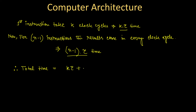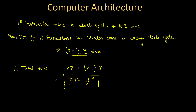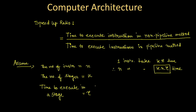Therefore, the total time required for executing n instructions in a pipelining method is the first instruction time plus the remaining instructions time: K×τ + (n−1)×τ, which simplifies to (n + K − 1)×τ. This is the time required to execute n instructions with K stages in a pipelining method.